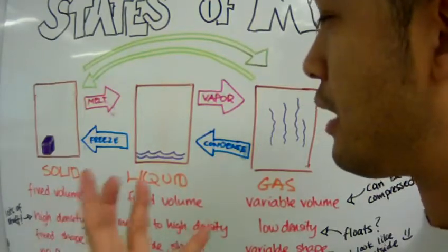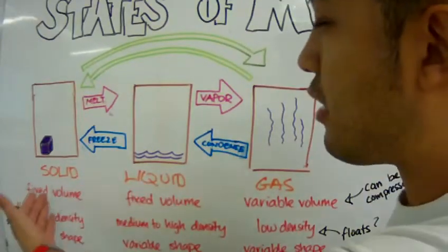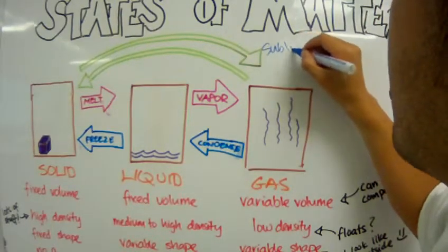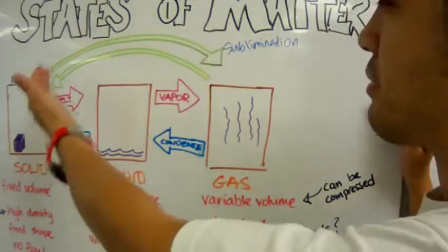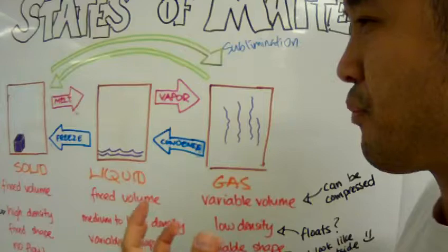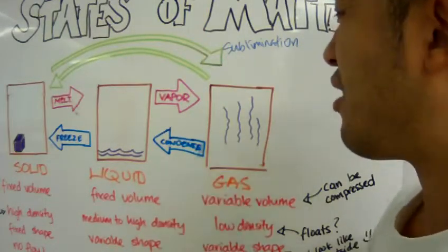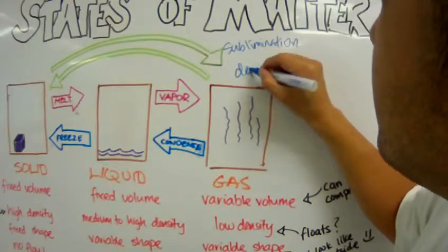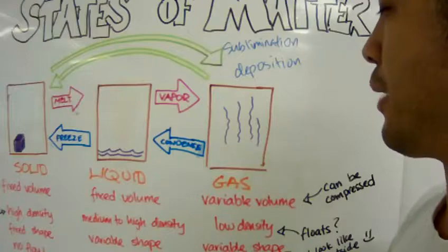Sometimes there are some materials that do not go through the liquid state at all. They jump straight from the solid state to the gas state, and that process is called sublimation. Like dry ice — it's solid carbon dioxide — when you leave it out in the open, it turns directly to gas. That's sublimation. And sometimes we can reverse the process, turning gas straight to solid. That process is called deposition — like depositing money in a bank.